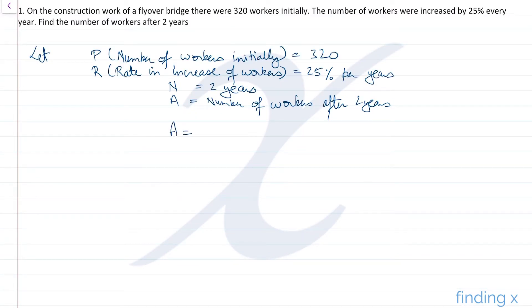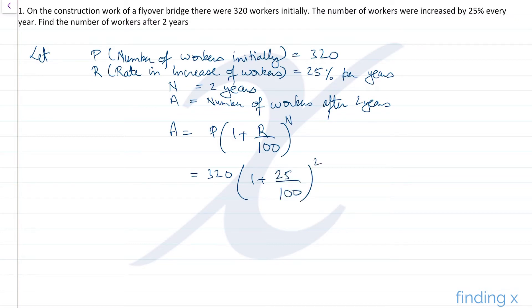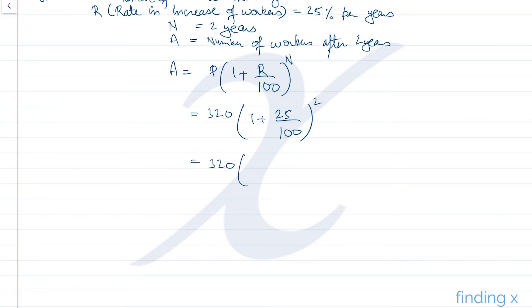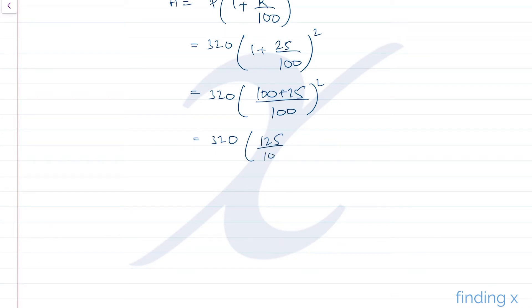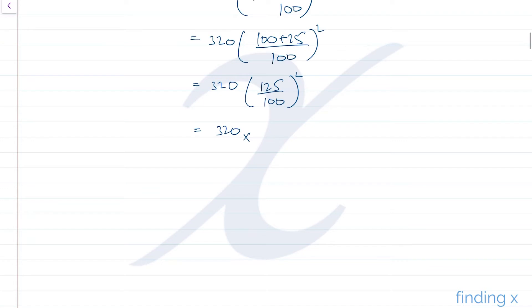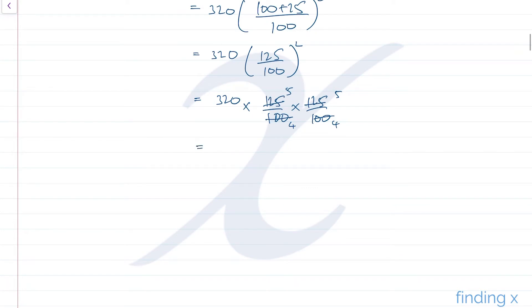We write the formula: A = P × (1 + R/100)^N. P is 320, R is 25, so we get 320 × (1 + 25/100)^2. Simplifying: 320 × (125/100)^2, which is 320 × (125/100) × (125/100). This simplifies to 320 × (5/4) × (5/4).